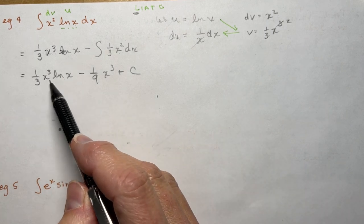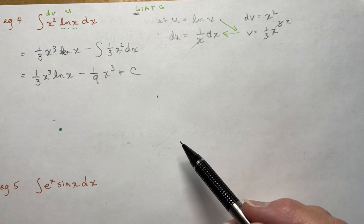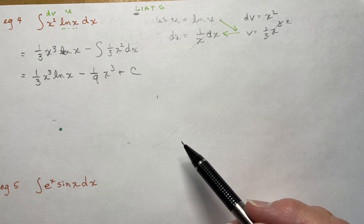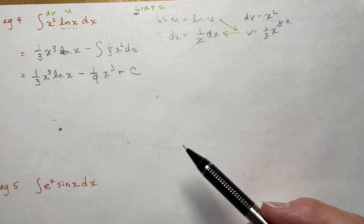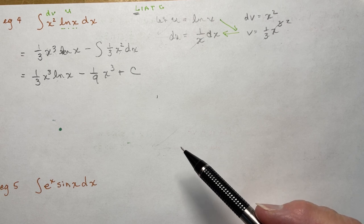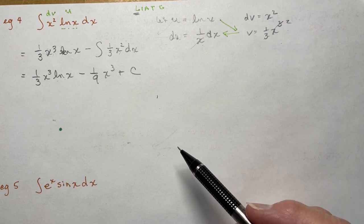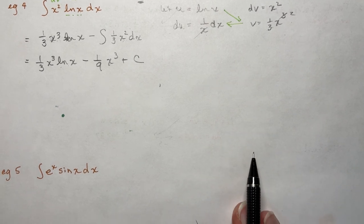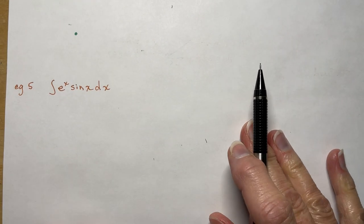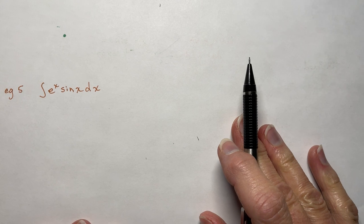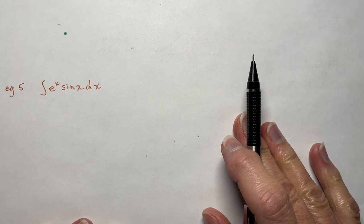You should be able to verify it. But this is going to be a product rule when you take the derivative — first times derivative of the second plus second times derivative of the first. Let's take a look at this next one because it's a little bit trickier.